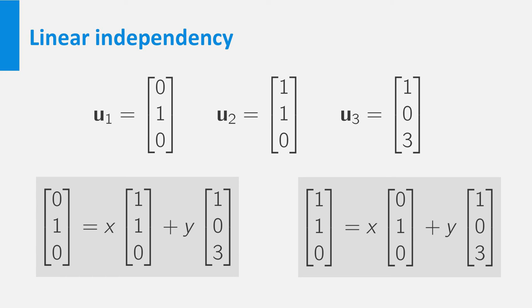Because the third coordinate must be 0, we know that y must be equal to 0. But then the first coordinate on the right hand side would be equal to 1 and not 0. You can figure out why the system of equations on the right hand side also does not have a solution.